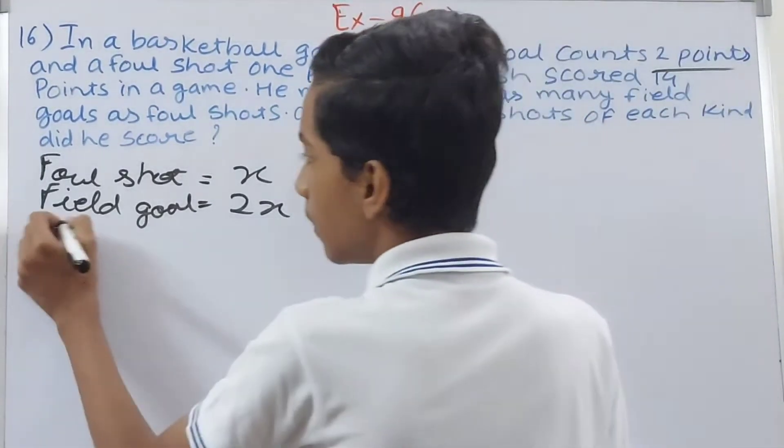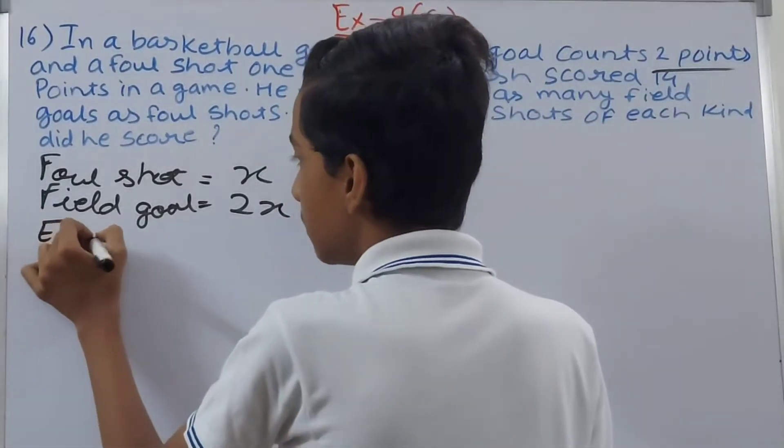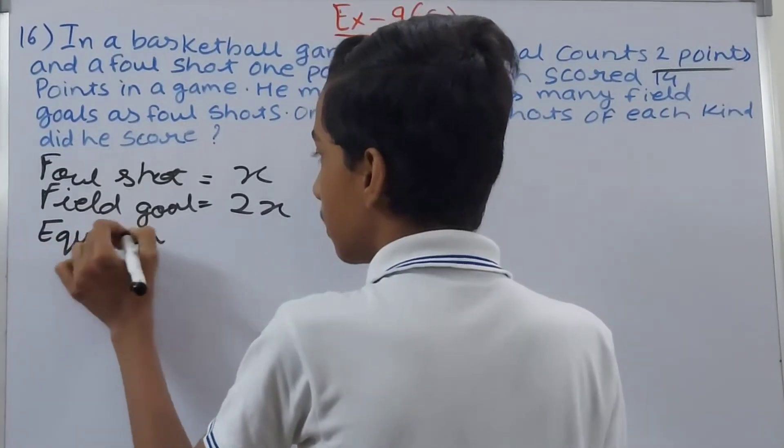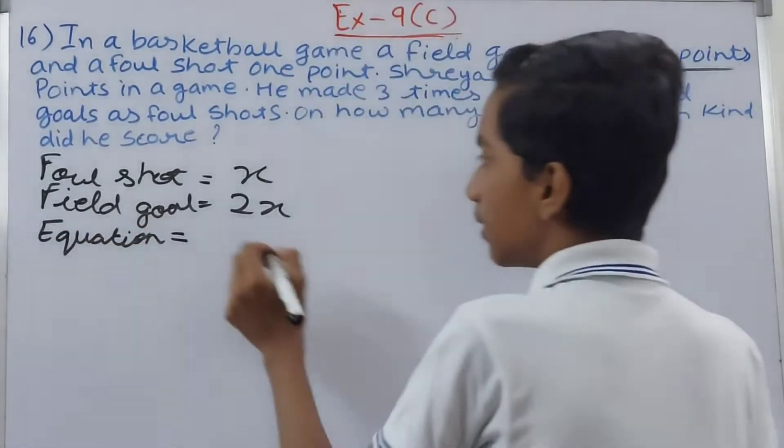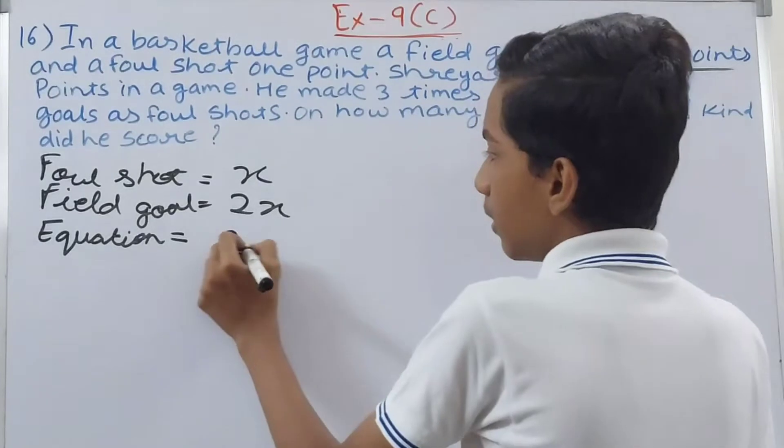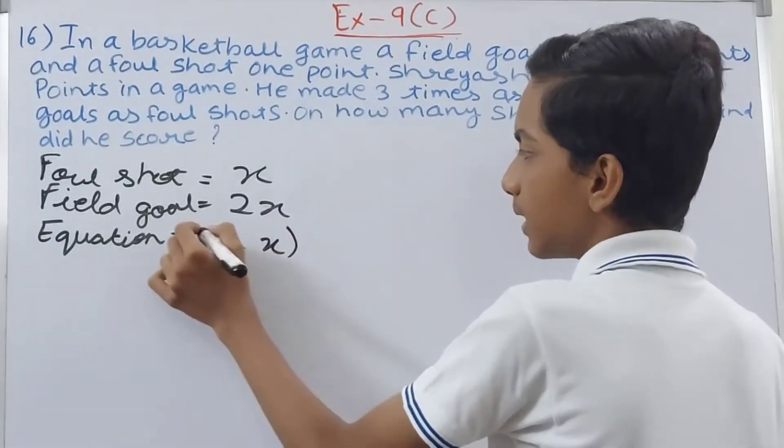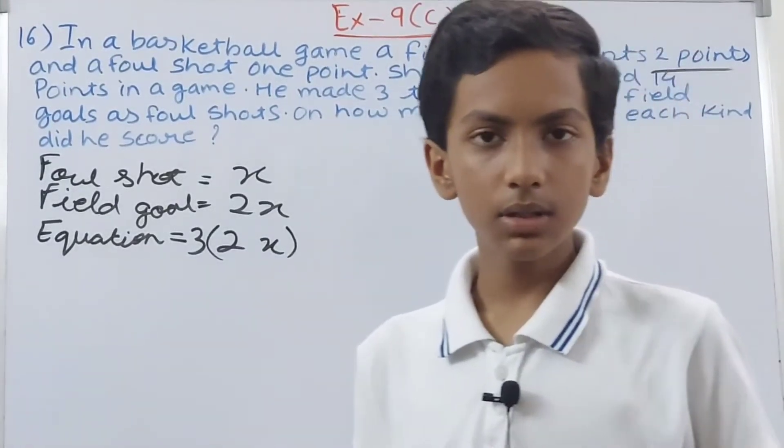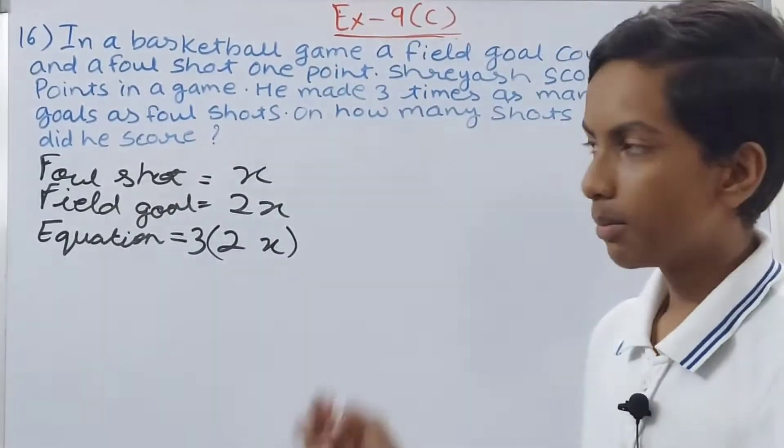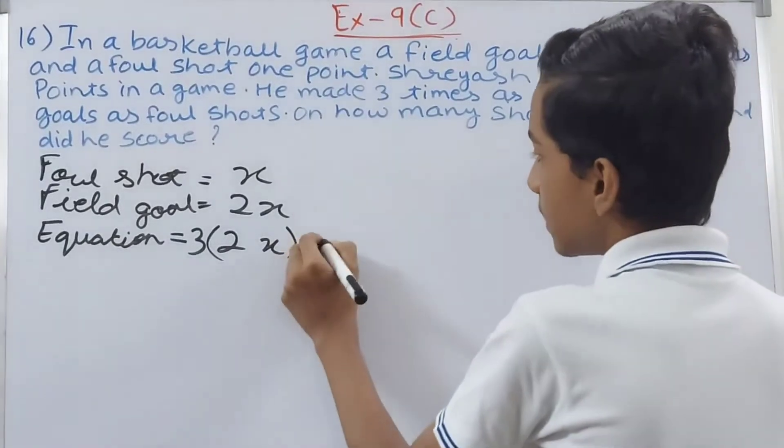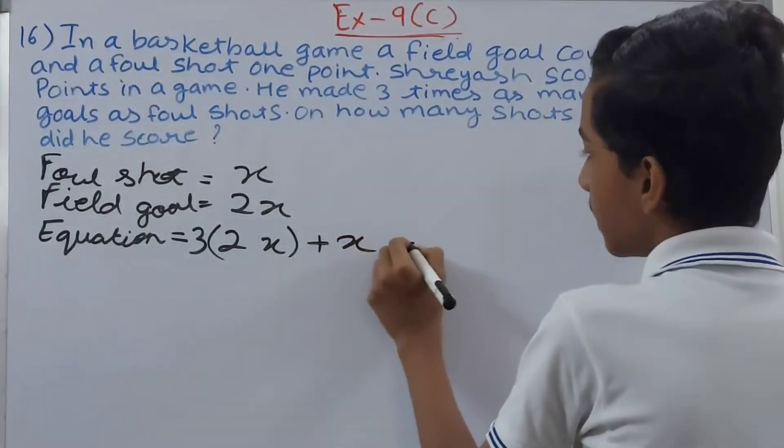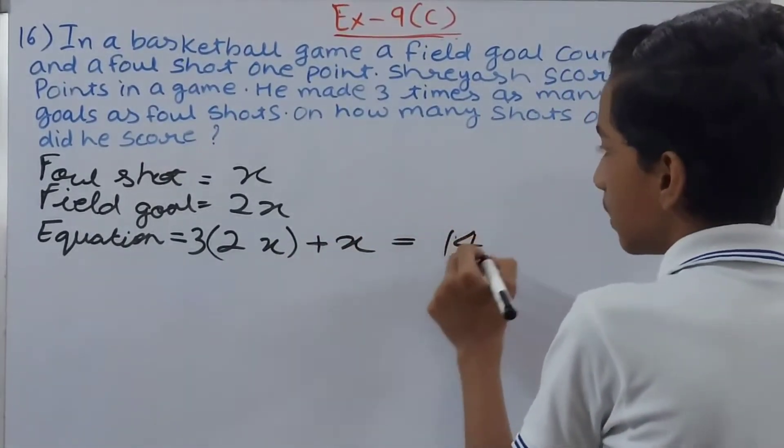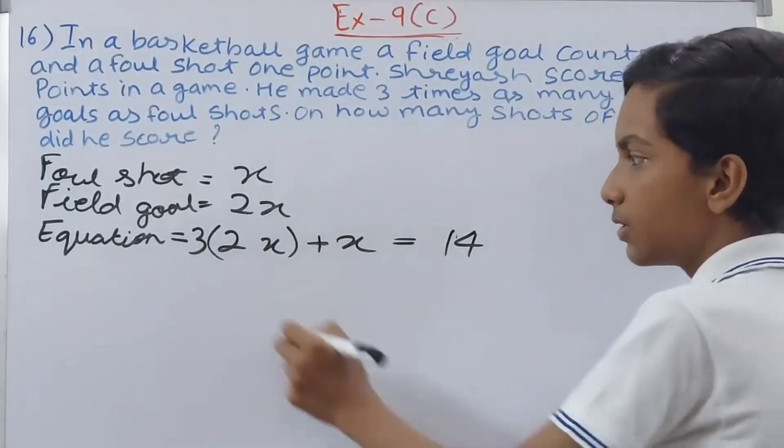Our equation will be: 3 times 2x plus x equals 14. Why 3? Because he scored three times more field goals than foul shots. So this becomes 6x plus x equals 14.